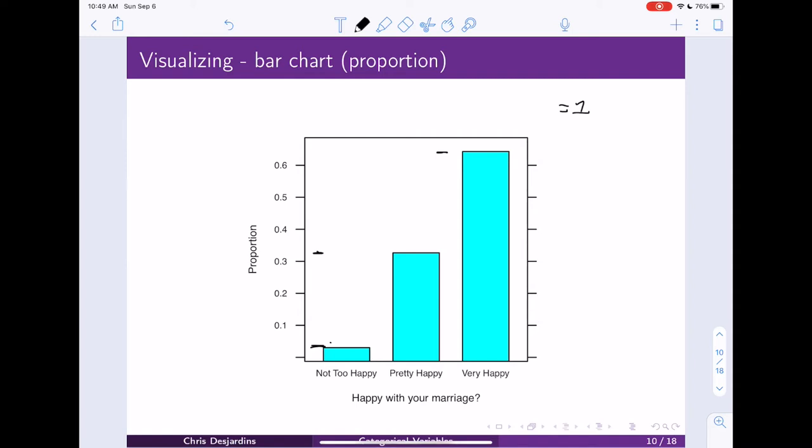So when you're making a bar chart in class, in stat key, I mean, crunch, excuse me, not stat key, it doesn't matter if you're creating proportions or you're visualizing categories. They're going to be the same shape.